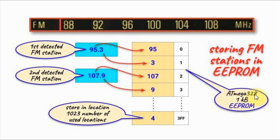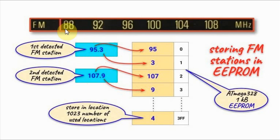The ATmega328 microcontroller has a 1 kilobyte EEPROM with 1024 memory locations. Each location can store a byte. The address of the first location is 0 and the address of the last location is hexadecimal 3FF. As an example, let's say we have detected two FM stations within the 88 to 108 MHz band. To store the frequency of the first station, we split it into two parts: the real part and the fractional part. We store the real part in the first location and the fractional part in the second location, then do the same for the second frequency.